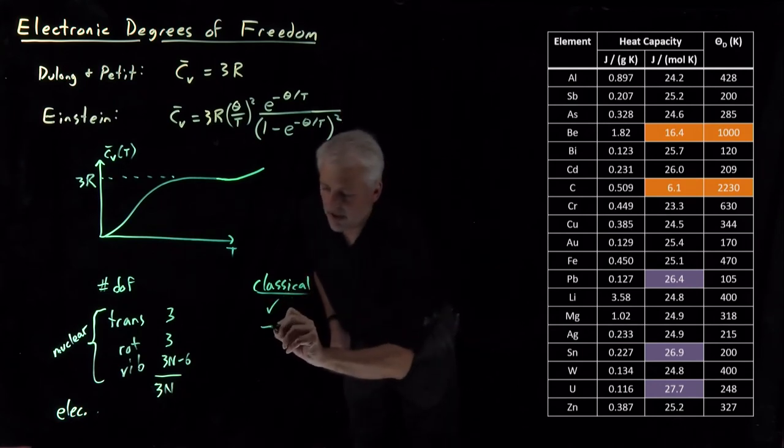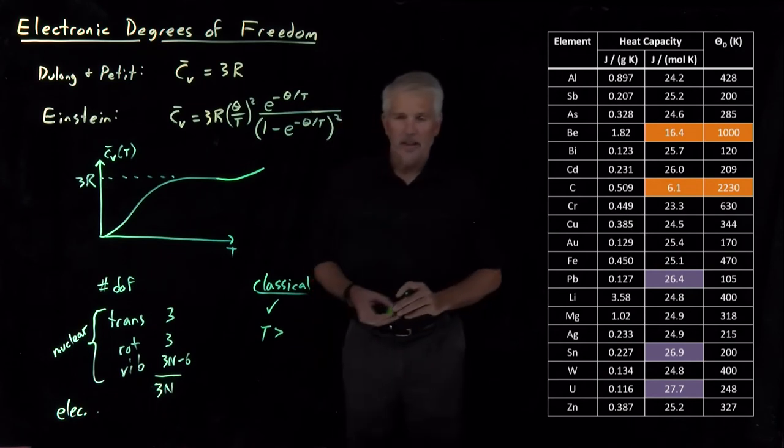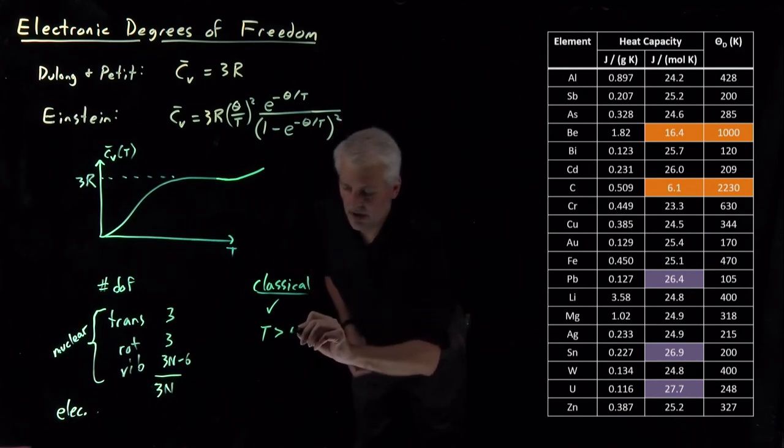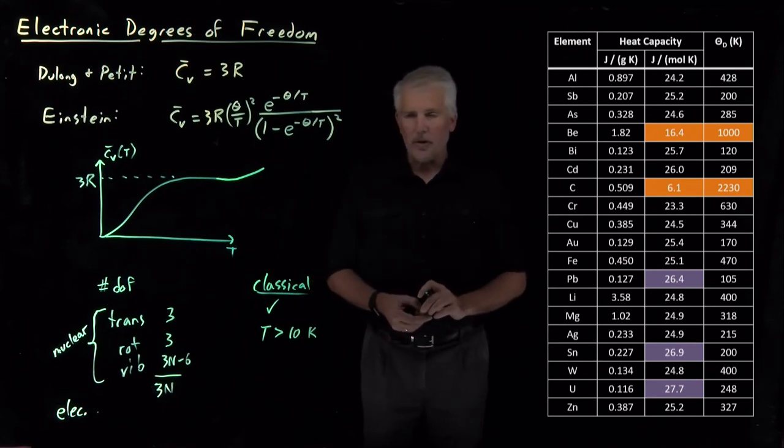Rotations, those are classical as long as the temperatures for diatomic molecules. We saw that those are classical as long as the temperature exceeds the rotational temperature. So that was roughly speaking somewhere in the vicinity of a few Kelvin or a few tens of Kelvin.